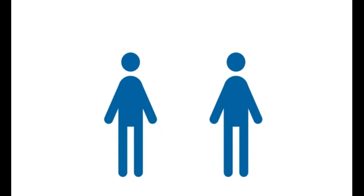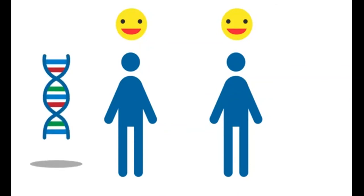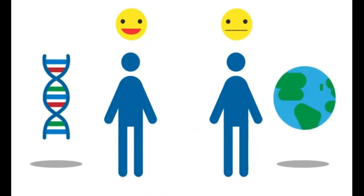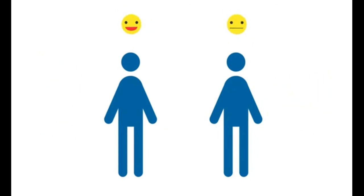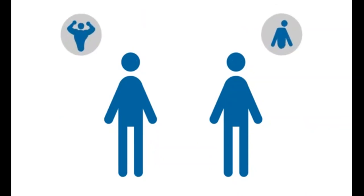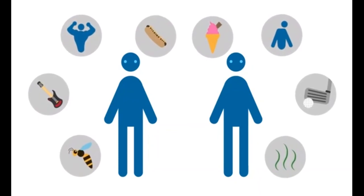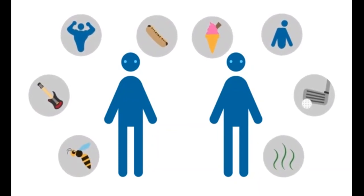To answer these questions, scientists can do experiments using identical twins. If the characteristic in both twins is the same, then it is most likely due to genetics. If it is different, then the environment has played an important role. For example, identical twins will have the same eye colour as this is only due to genetics, but they will have different personalities, talents, likes and dislikes — showing that these are also influenced by the environment.